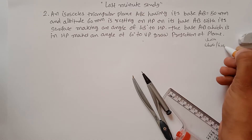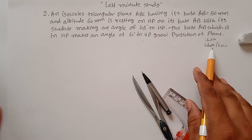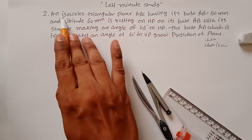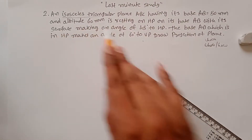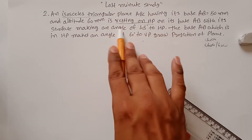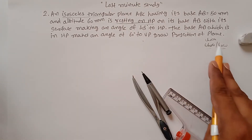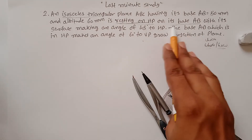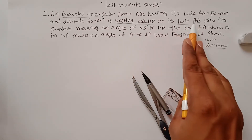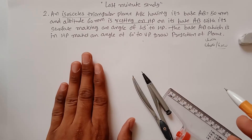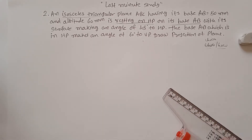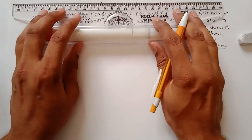Ask yourself three questions: which plane is it, where is it, and how is it resting? It is an isosceles triangle resting on the HP with its base AB. Because it is resting on HP, you have to draw the top view, as the top view gives you the true shape of your plane.